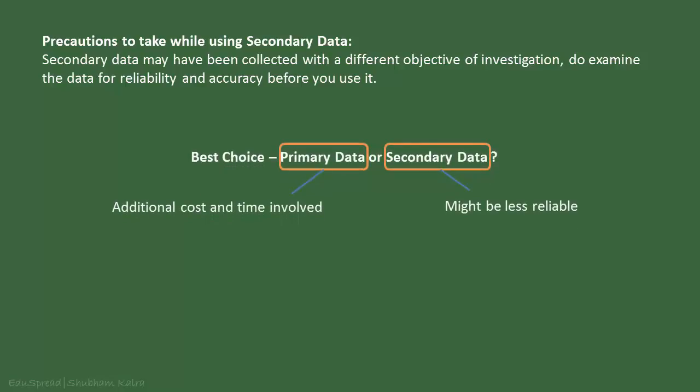Though the secondary data might be less reliable than the primary data, it doesn't mean that you should always collect your own data. This is because there is additional time and cost involved in obtaining the primary data. The use of secondary data becomes desirable when data must be obtained in a relatively short period of time. To put it in short, there is a trade-off involved in choosing between secondary data and primary data, and you should make sure that the cost should not exceed the benefits.